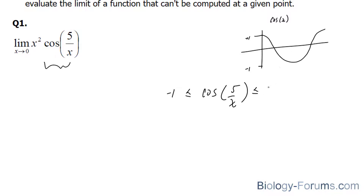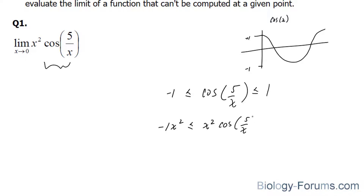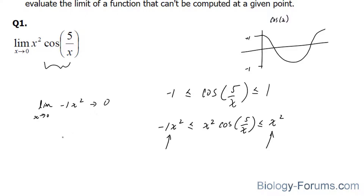And it's less than or equal to positive 1. In our next step, we'll multiply this whole inequality by x squared, giving us negative x squared, x squared times cosine 5 over x, and x squared. We can take the limit of each bound. The limit as x approaches 0 for negative x squared equals 0, and the limit as x approaches 0 for x squared also equals 0. Therefore, according to the squeeze theorem, the limit of x squared times cosine 5 over x is also equal to 0.